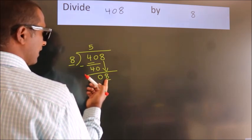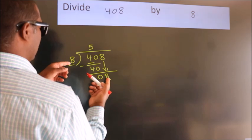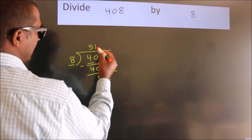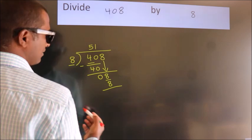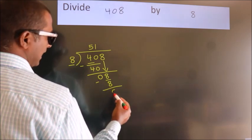When do we get 8? In 8 table. 8 once, 8. Now we subtract. We get 0.